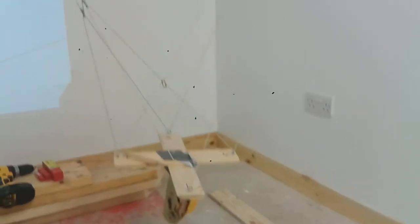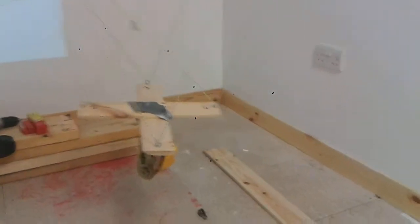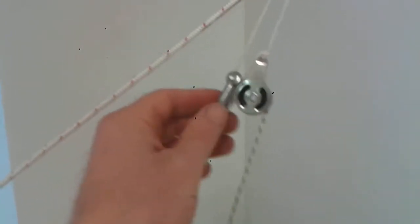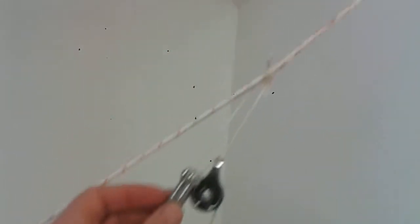I've bashed together a very simple version of a kite aerial photography Picavet system here, just to show you how easy it is. You've got two pulleys, well in my case a shackle and a pulley at the top.